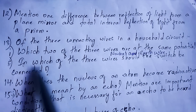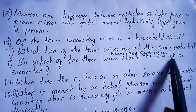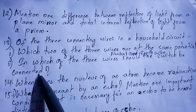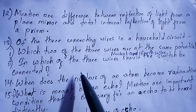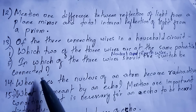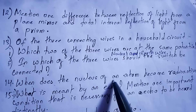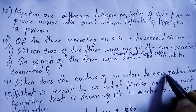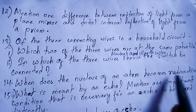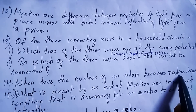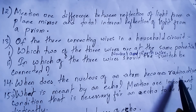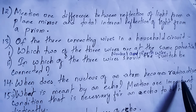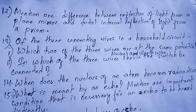In which of the three wires should the switch be connected? This answer you will write in the comment section. Next question: when does the nucleus of an atom become radioactive? The nucleus of an atom becomes radioactive when the atomic number of an element is more than 82.